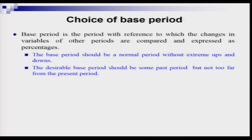I have already referred to the concept of base period or reference point. Note that reference point or base selection is a very critical part of index number analysis. It is the period with reference to which the changes in variables of other periods are compared and expressed as percentages. If you change the base, these percentages or ratios are going to change. Statisticians have provided some guidelines to choose a base period — they generally say the base period should be a normal period without extreme ups and downs.